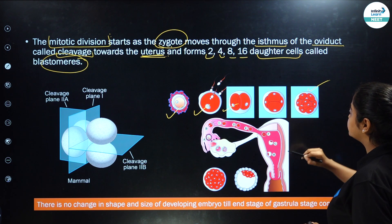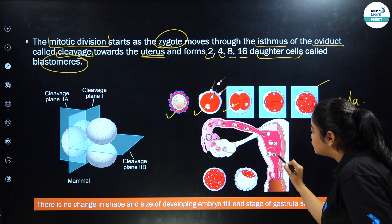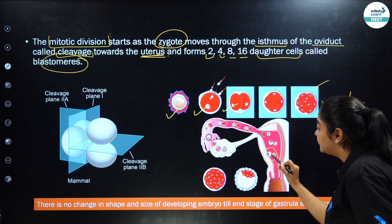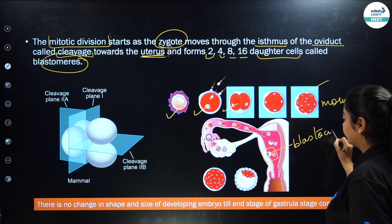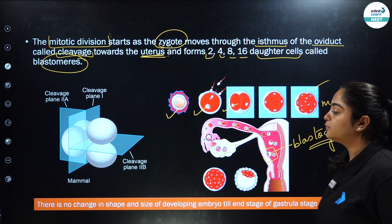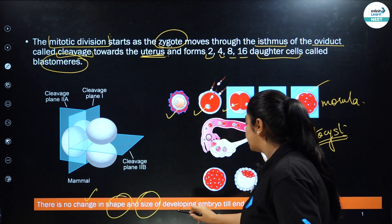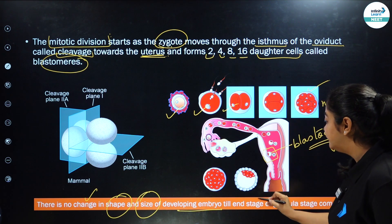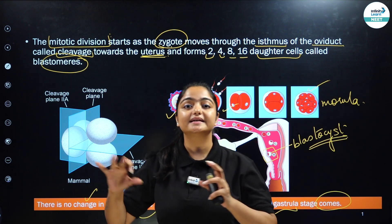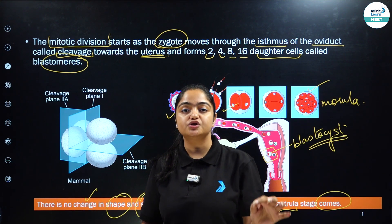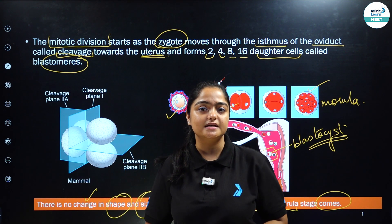Here you can see the morula structure, and the attachment to the uterine wall takes place through the blastocyst structure. Also, an important point to remember: no change in shape and size will occur in the developing embryo until the end of the gastrula stage. Once the gastrula stage is reached, no further change in shape and size occurs in the developing embryo. That is how embryonic development takes place.